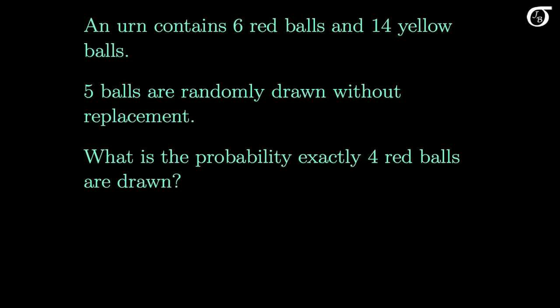Let's look at an example to start. An urn contains 6 red balls and 14 yellow balls. These type of urn and balls problems are classic hypergeometric problems. 5 balls are randomly drawn without replacement. What is the probability exactly 4 red balls are drawn? An important point to note here is that the sampling is done without replacement — once a ball is chosen, we look at the color and set it aside and it cannot be chosen again.